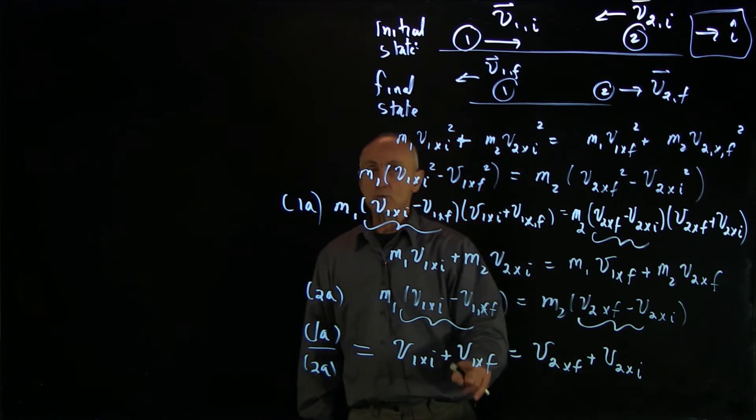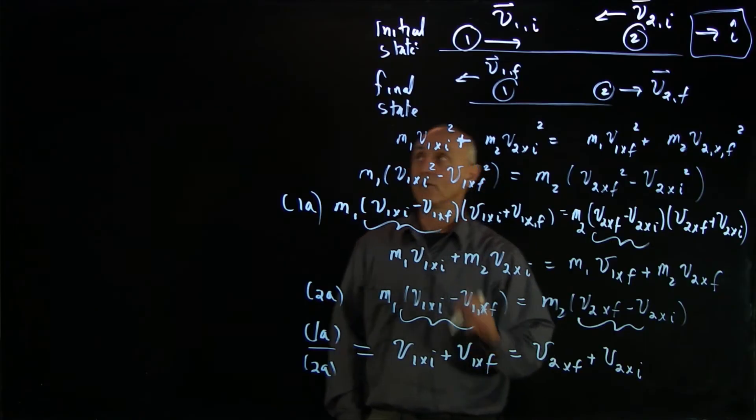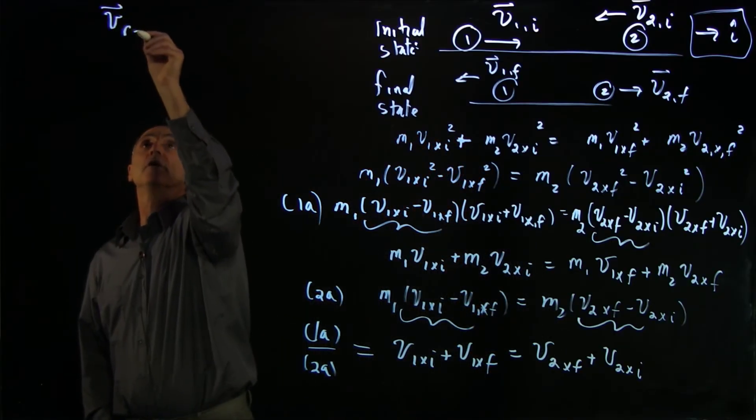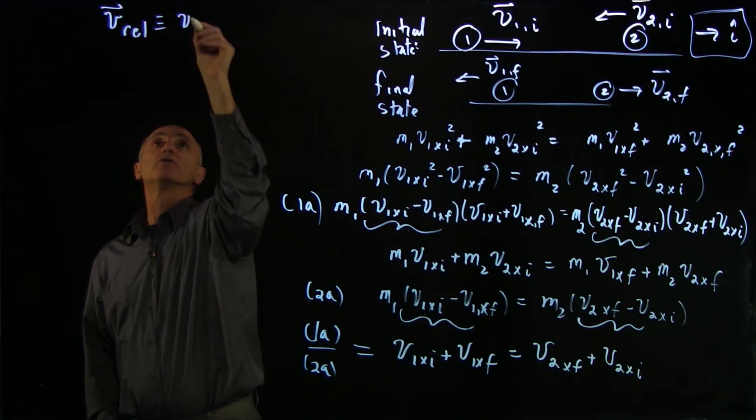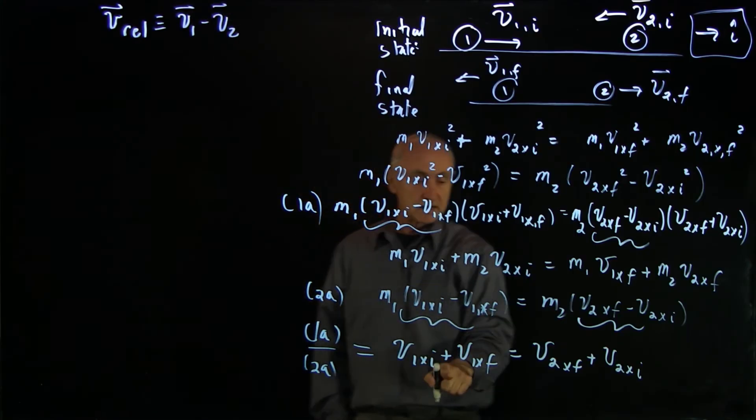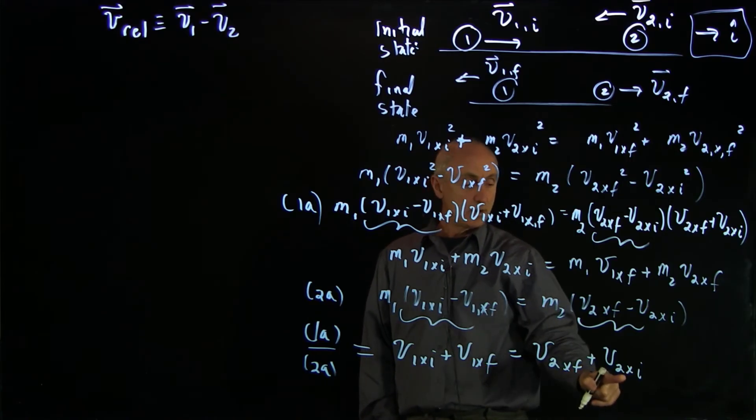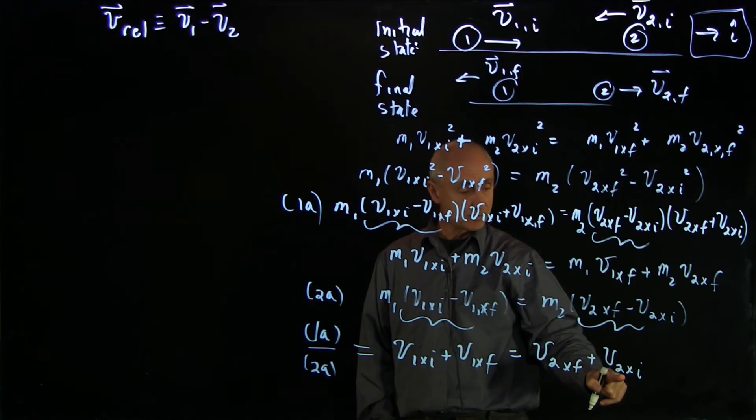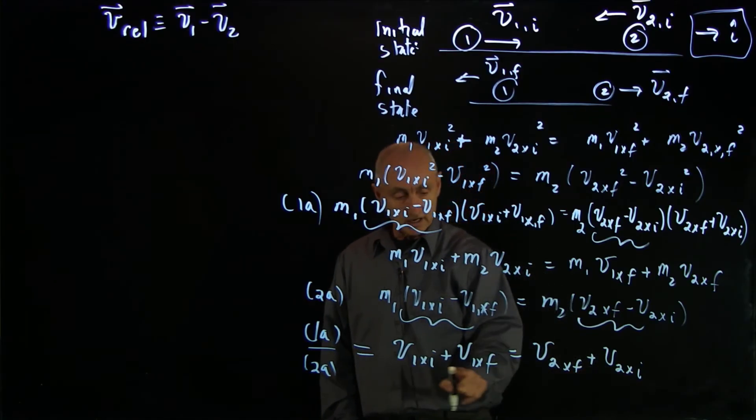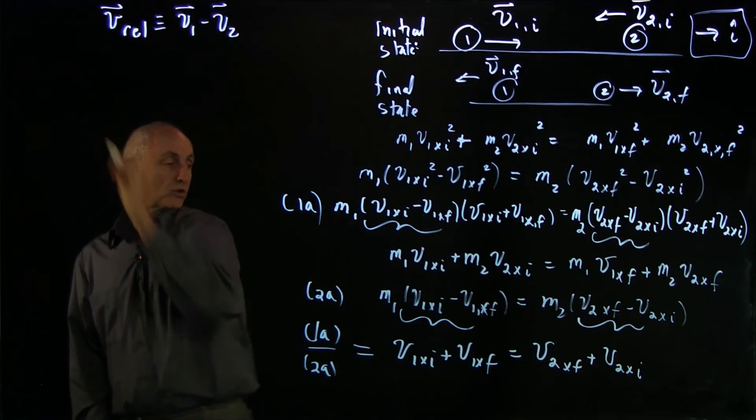Now what I want to do is write this in terms of those concepts of relative velocity we had. Remember, just to motivate this, the relative velocity by definition was v1 minus v2. So let's write this in terms of the initial and the final. So in order to do that, we have to bring this initial term over to here and this final term over to there.